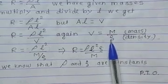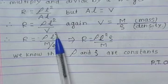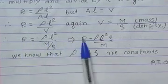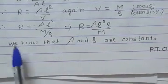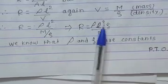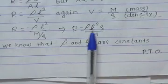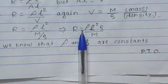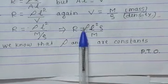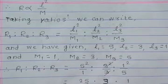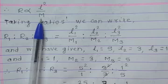Since ρ and density are constants, R is directly proportional to L square and inversely proportional to M. We can write the ratio using proportionality sign.